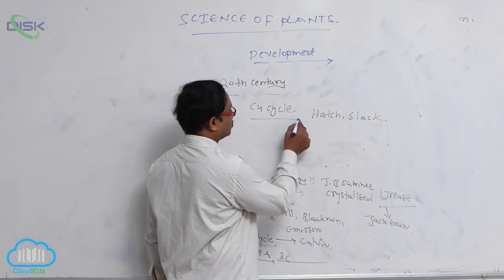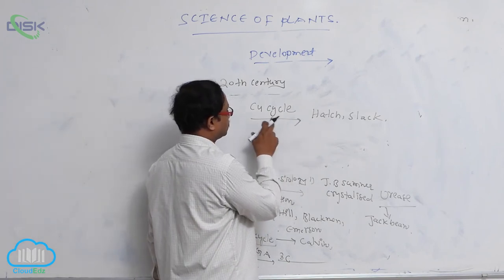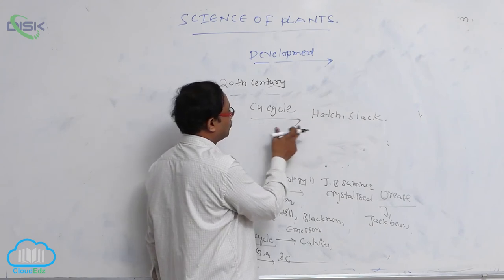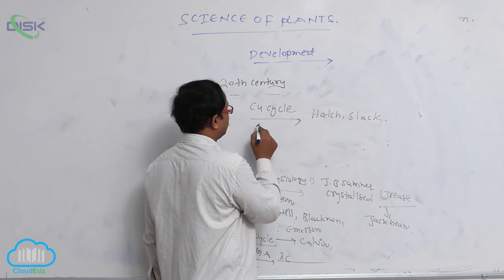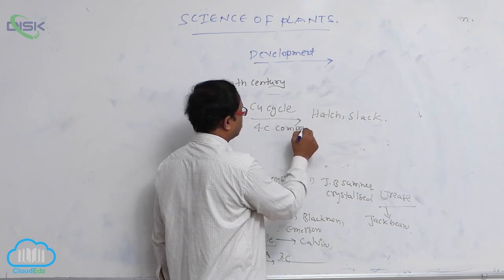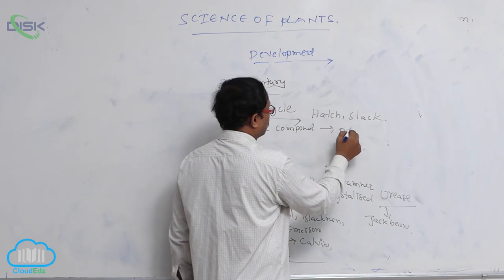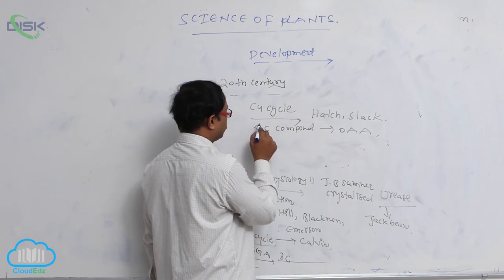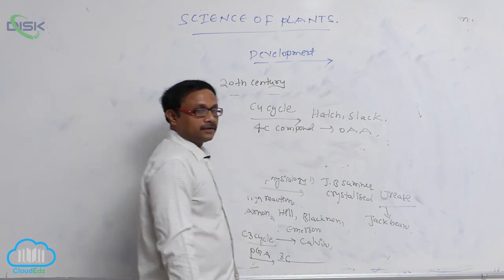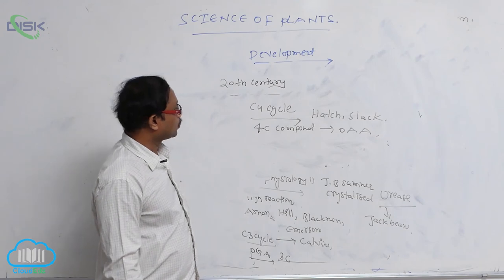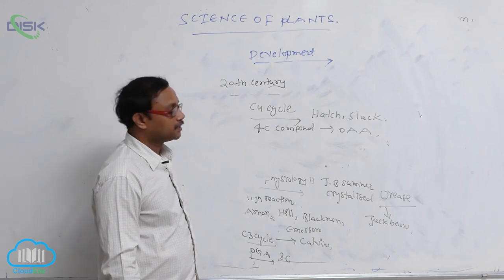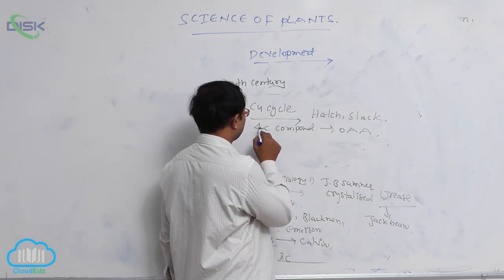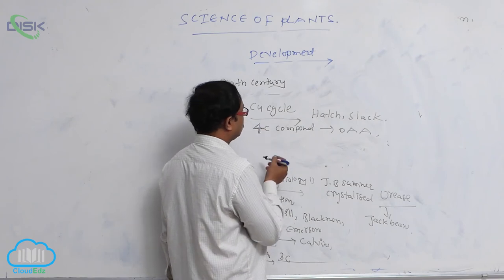In some plants, at the time of carbon fixation, it does not produce a three-carbon substance; instead it produces a four-carbon compound known as oxaloacetic acid. That's why it is known as the C4 cycle. C4 plants have the ability to grow in high temperature regions and perform more photosynthesis than C3 plants at high temperatures.